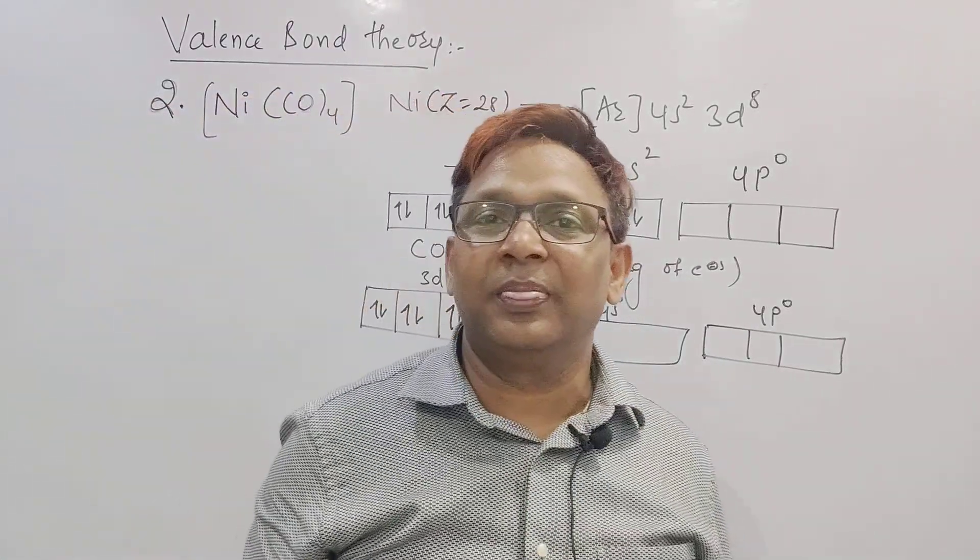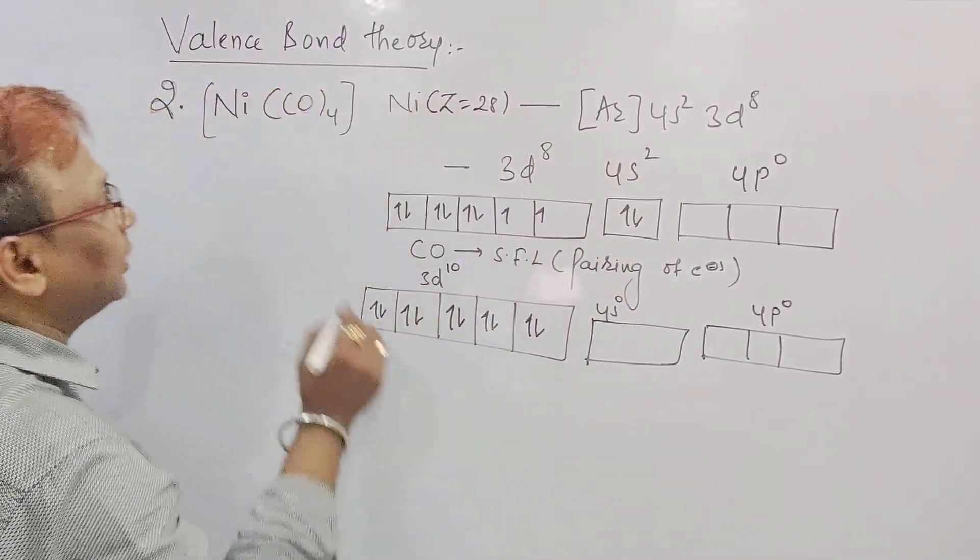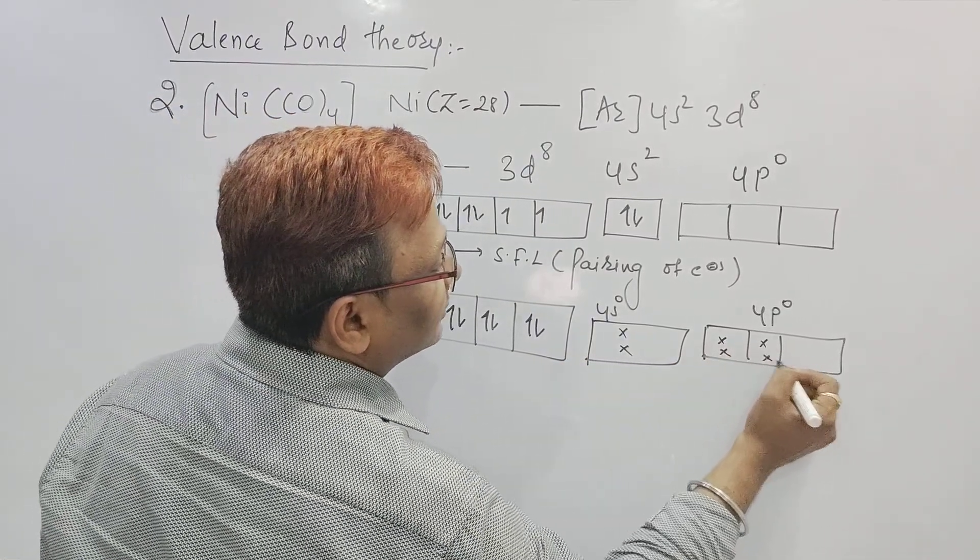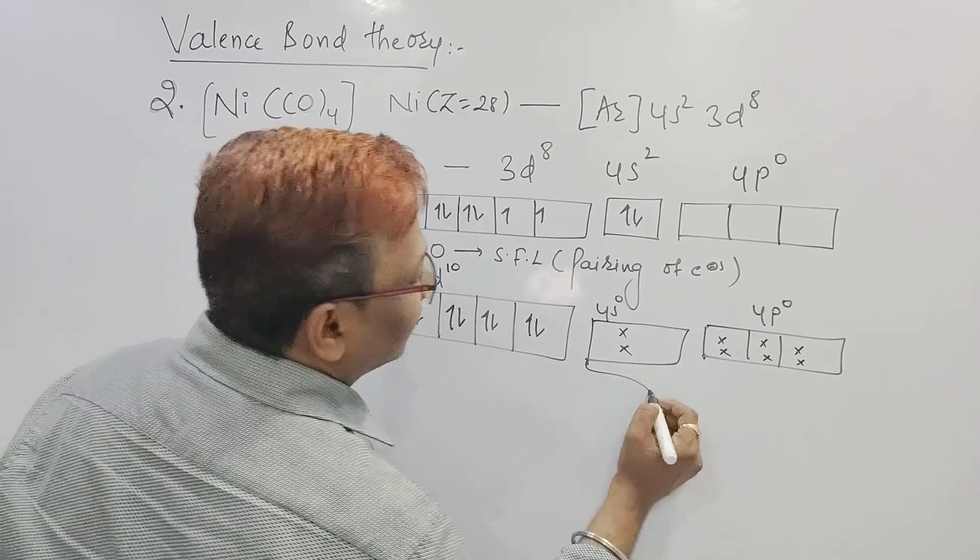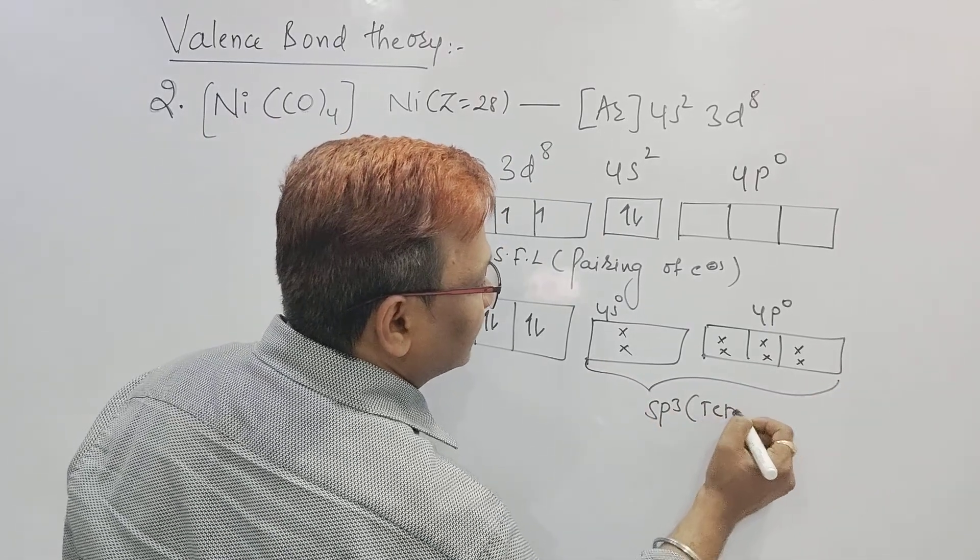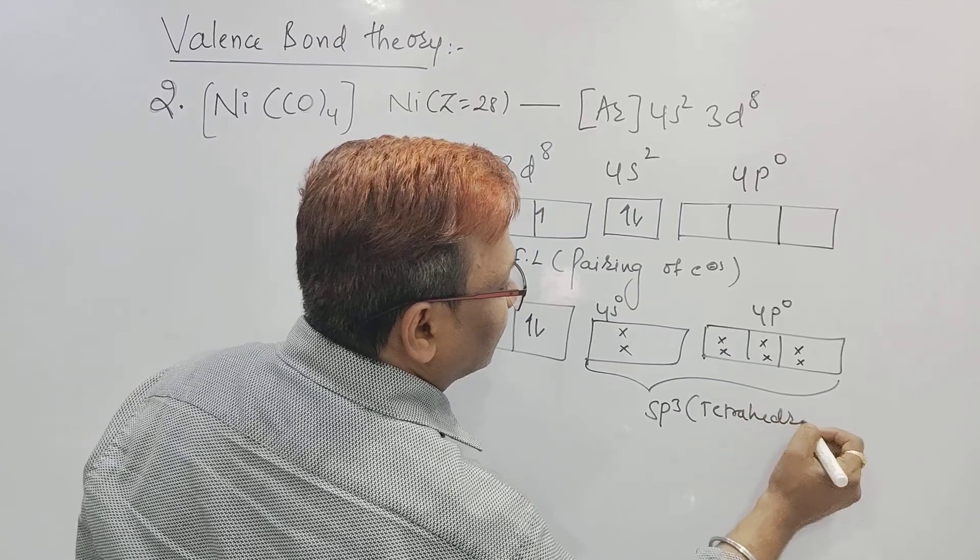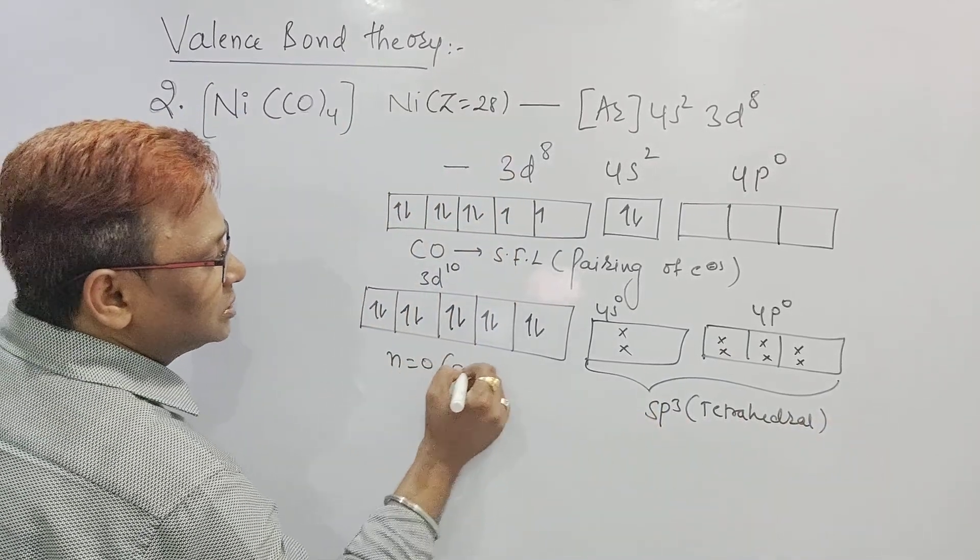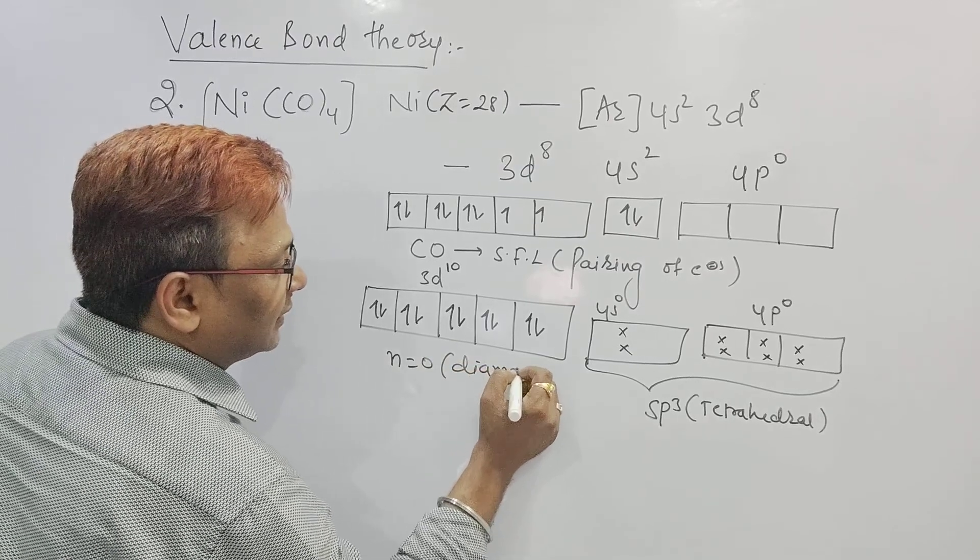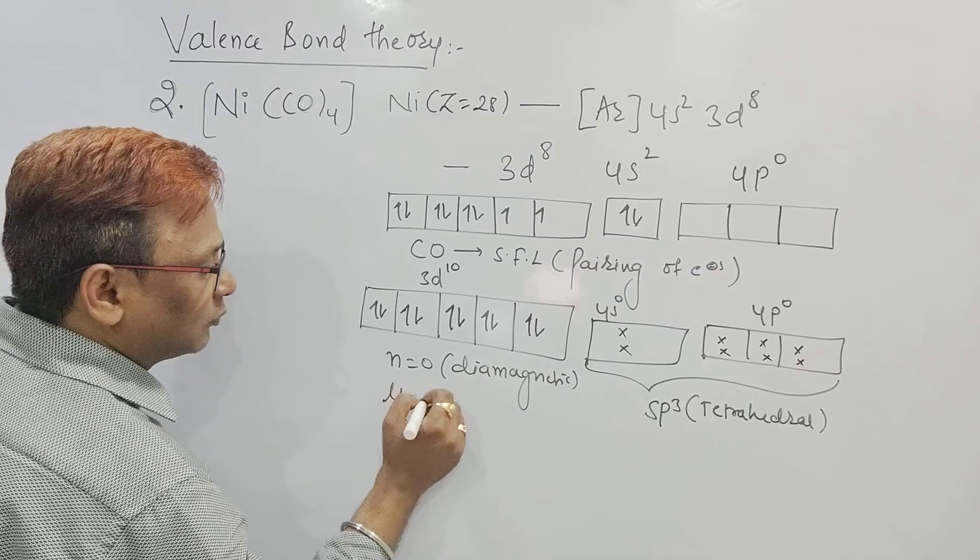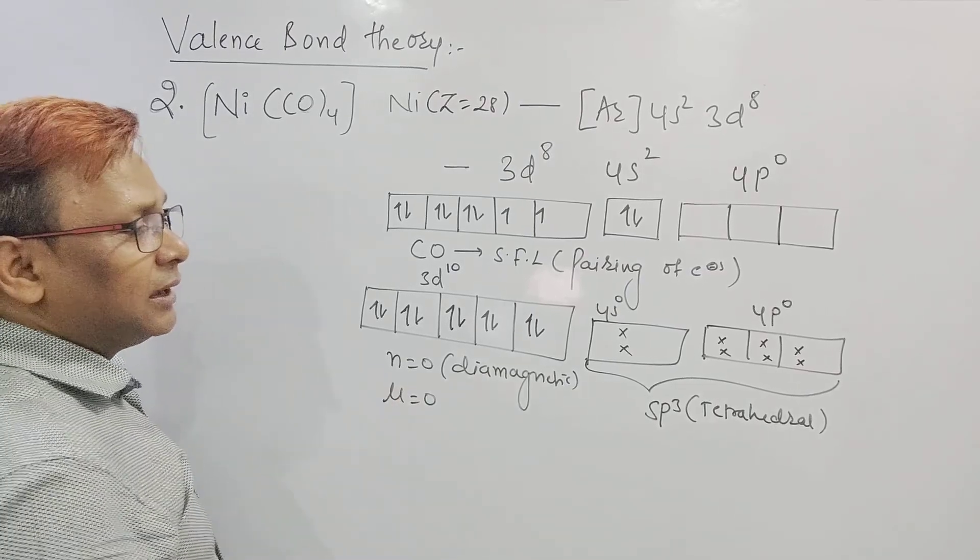How many ligands we have? 4 ligands we have. And now each ligand will donate its electrons to the vacant orbitals. 1, 2, 3, 4. Its hybridization is SP3. That means geometry is tetrahedral. Tetrahedral geometry again we can say no unpaired electron. So it is diamagnetic in nature. Unpaired electron 0. Diamagnetic means magnetic moment also 0.